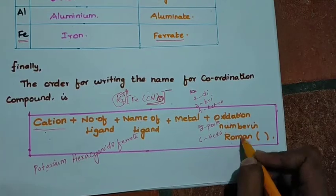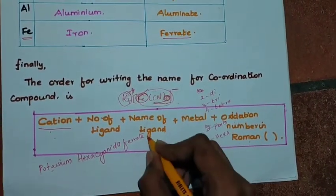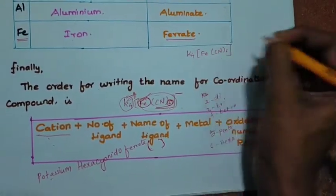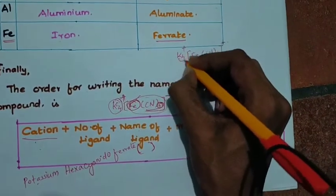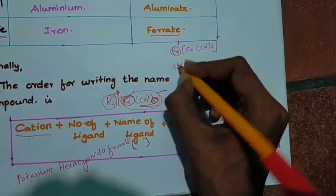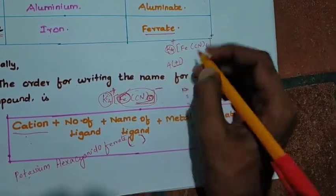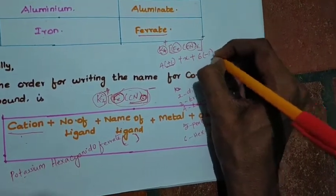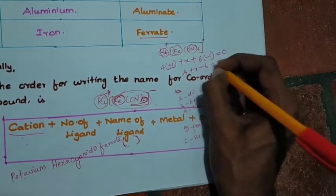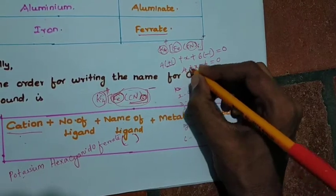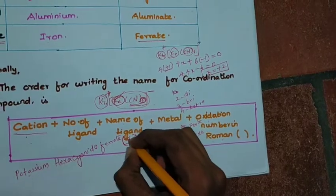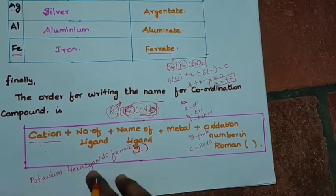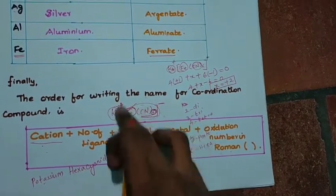Now we find the oxidation state. For K4[Fe(CN)6]: potassium has oxidation state +1, so 4 × (+1) = +4. Cyanide (CN⁻) is 6 × (−1) = −6. So: 4 + x − 6 = 0, giving x = +2. So iron is in oxidation state +2, written in Roman numerals as (II). The full name is: potassium hexacyanidoferrate(II).